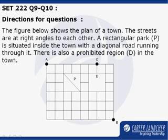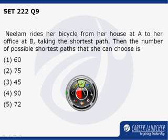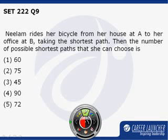The streets are at right angles to each other in the given figure. The rectangular park P is situated inside the town with a diagonal road running through it. There is also a prohibited area D in the town. Neelam rides her bicycle from her house at A to her office at B, taking the shortest path. We need to find the number of possible shortest paths she can take.